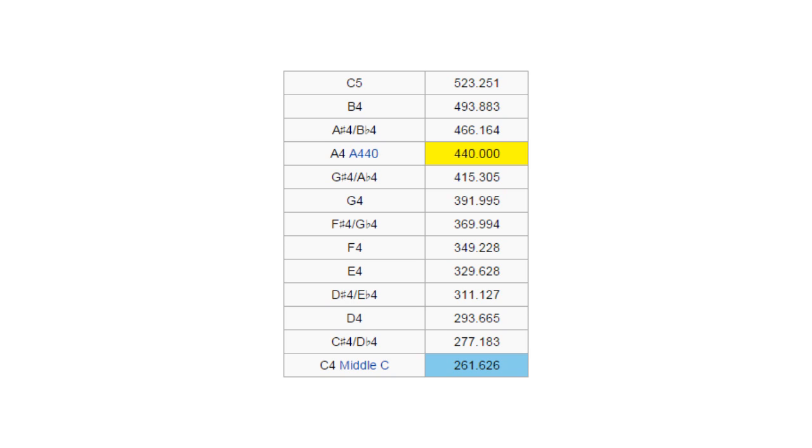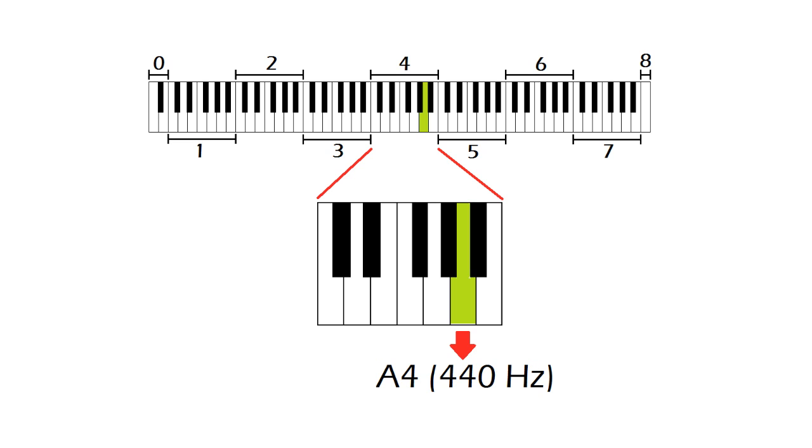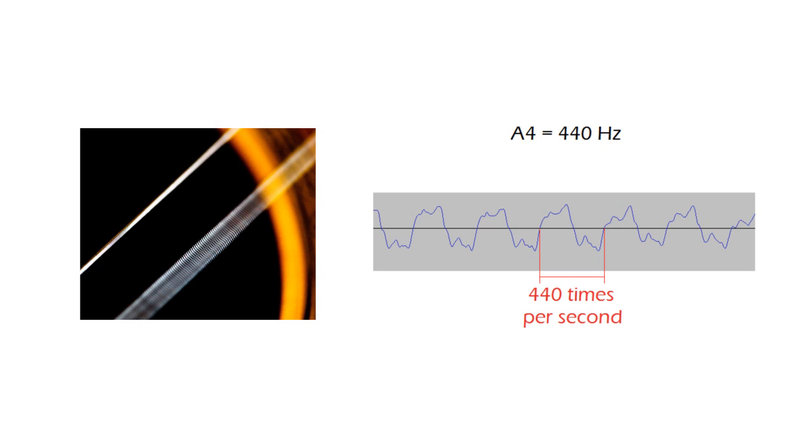Each note has a previously established frequency. For example, for the A note in the fourth octave, or A4, its frequency is of 440 Hz. This means, for example, that if the note A4 is played on a guitar, the string will perform its vibration pattern 440 times per second, which is the same frequency with which it creates pressure variations in the air with its vibration. A slight deviation in its frequency would make us perceive the guitar as out of tune.